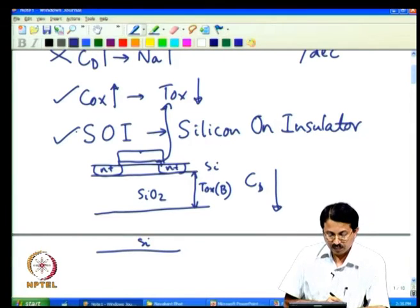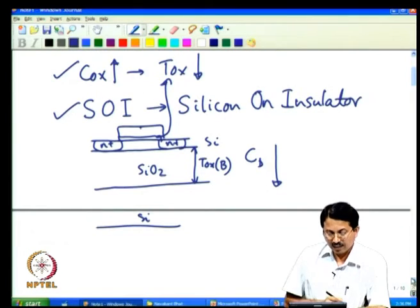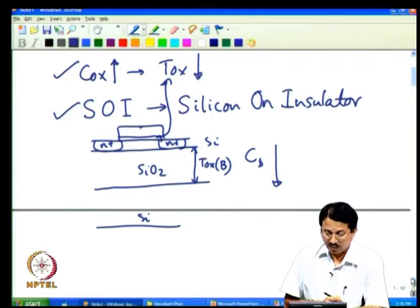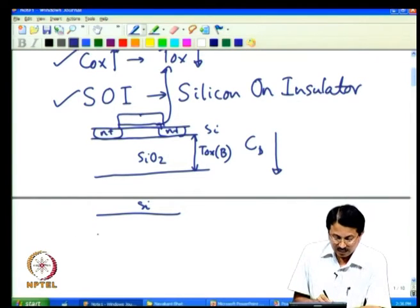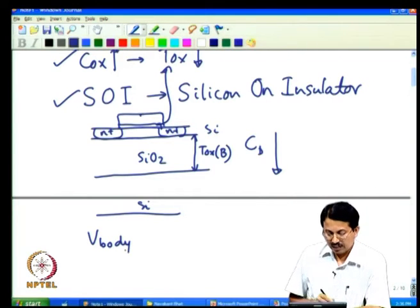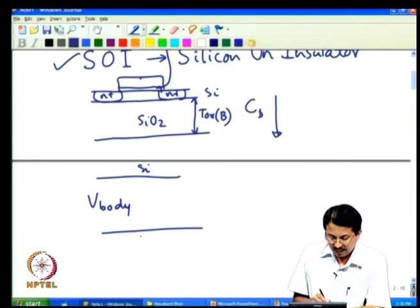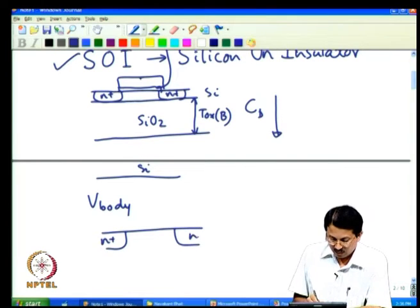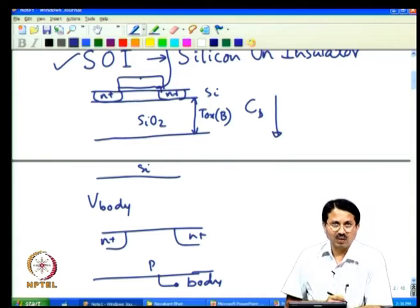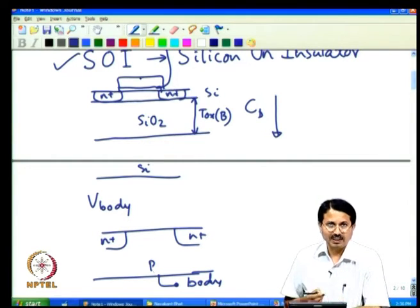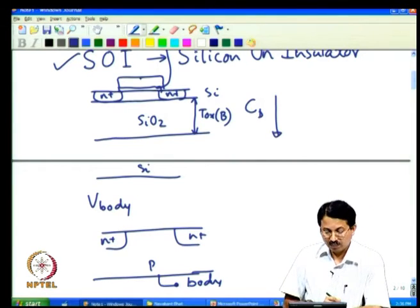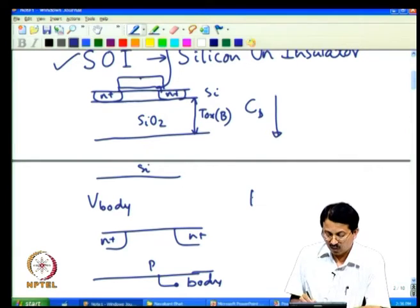Another way to minimize Cd is using body bias. The transistor is a four-terminal device, and in an n-channel transistor the P-type body is typically at ground potential. You can intentionally reverse-bias the body; as you may recall from basic MOS theory, reverse body voltage increases threshold voltage — that is the body effect.